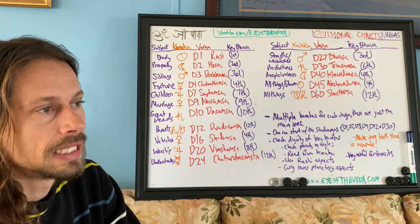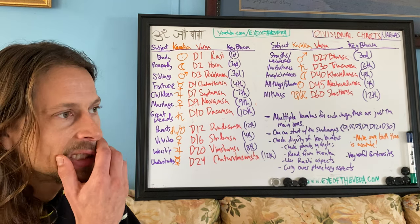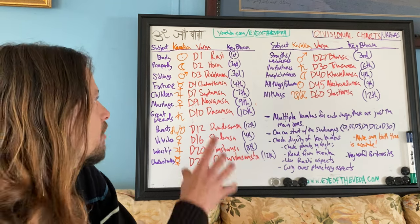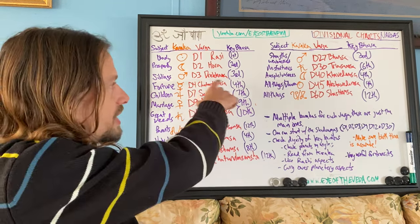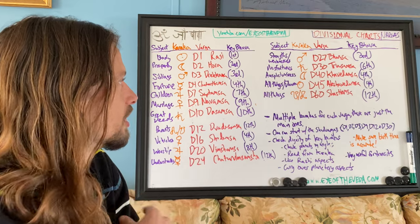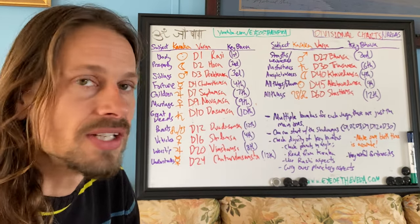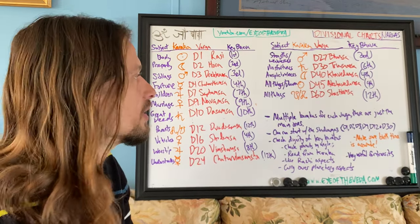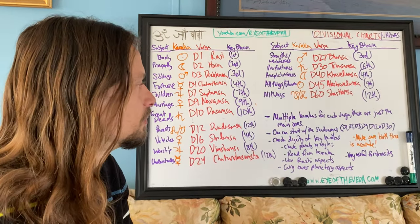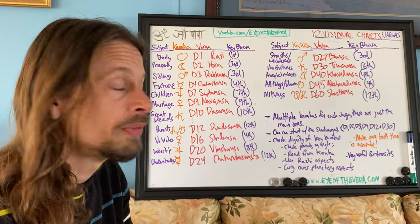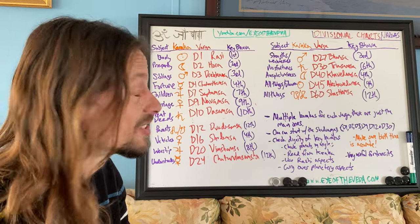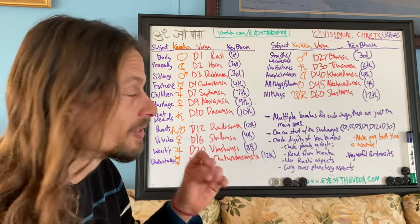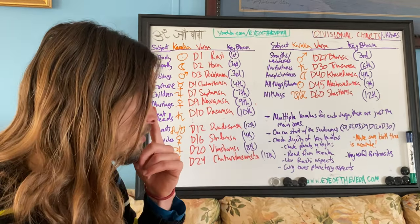There are other Vargas, like the Panchamsha (D5) or the Shashtamsha (D6), but these can be saved for the future. The ones covered should be more than enough to give a solid overview for now.